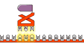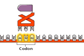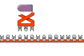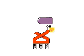The three bases on the tRNA, called the anticodon, hydrogen bond to their complementary codon on the mRNA. The anticodon on the tRNA also specifies which amino acid is bound to its three prime end.